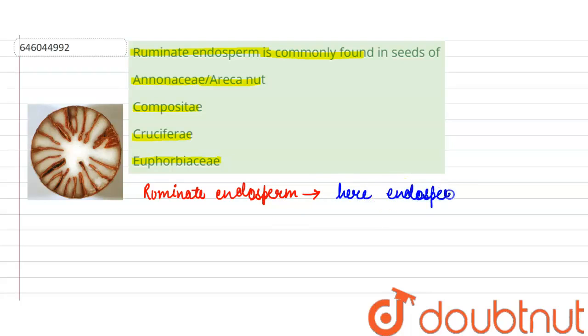This type of endosperm develops early and hence the in-growths are formed directly into its tissue.